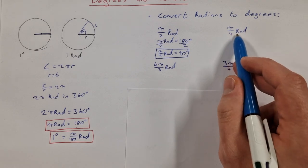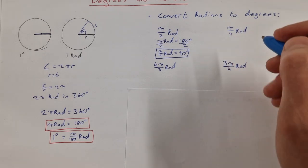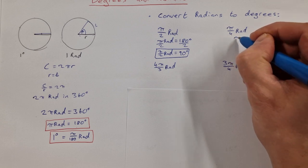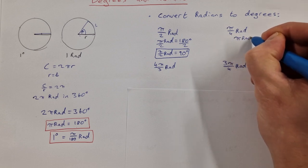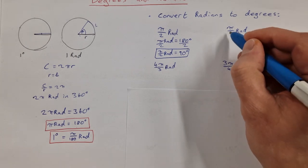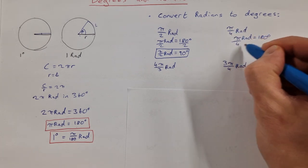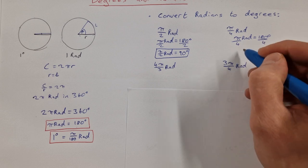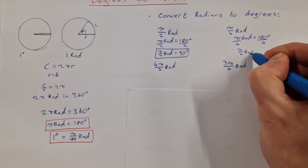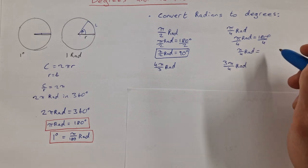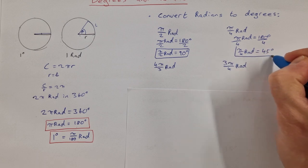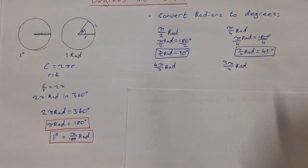What about π/4 radians? Again starting with π radians equals 180 degrees. I want π/4 so I divide both sides by 4. That gives π/4 radians equals 180 divided by 4, which is 45 degrees. So π/4 radians is 45 degrees.